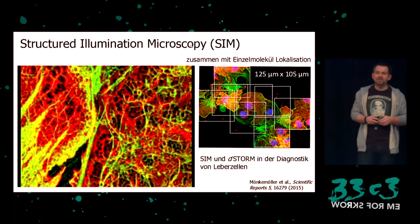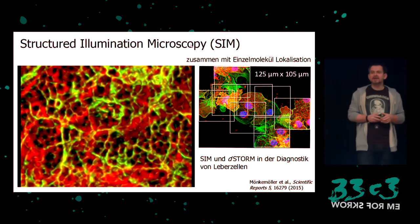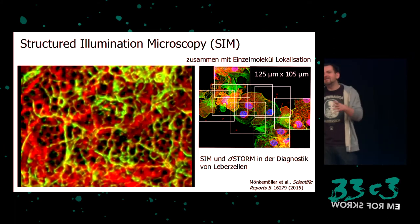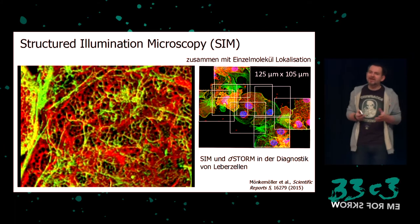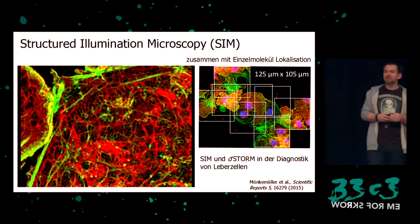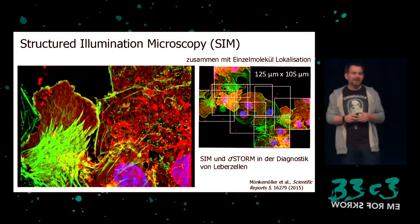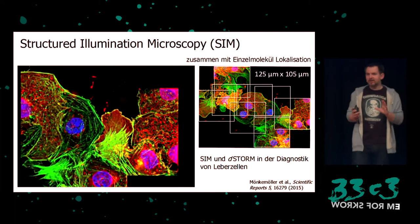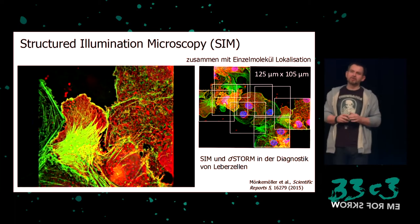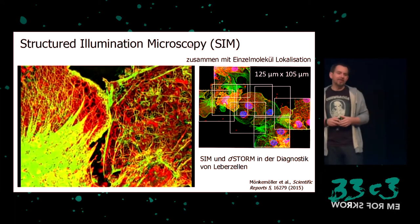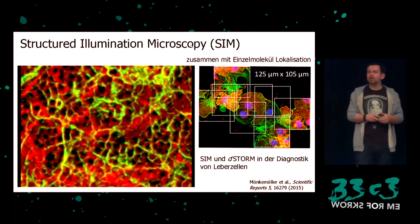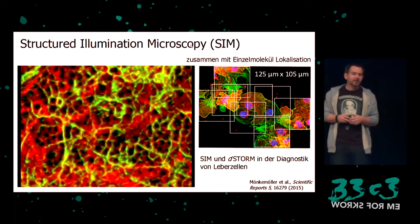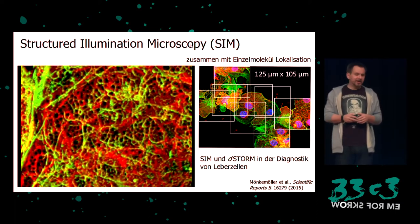Here is a SIM image — this is a localization microscopy from liver cells. It was found that in diagnostics, where speed is important, there is a real advantage from super-resolution for certain diseases, because the pores in the liver cells have the perfect size to use super-resolution microscopy, where otherwise tedious lab work would be necessary. This is from an open access paper — you can look at it online.